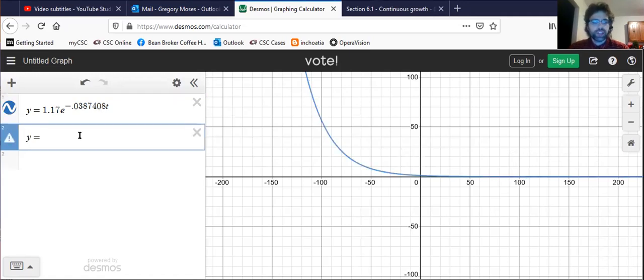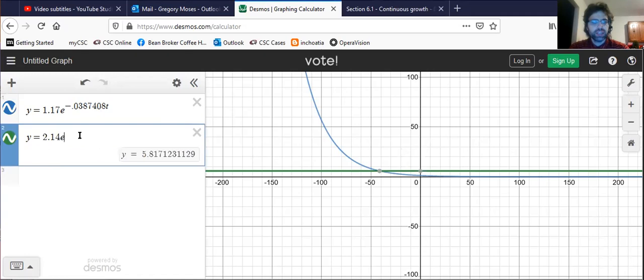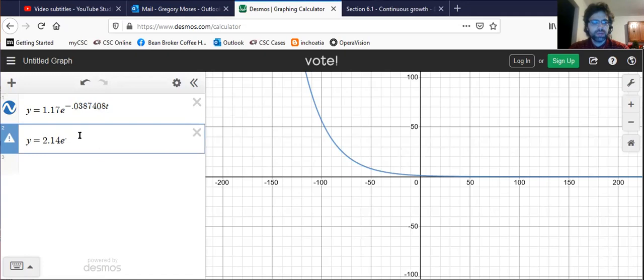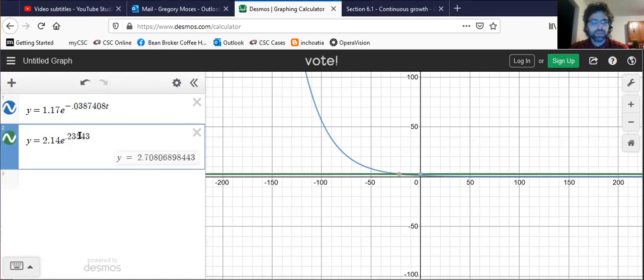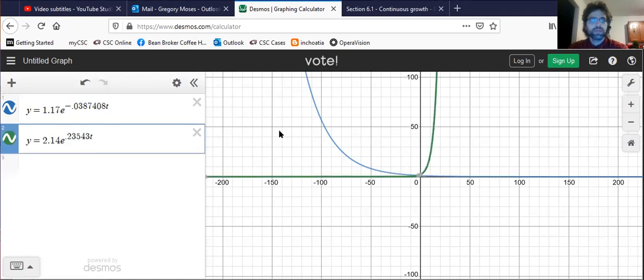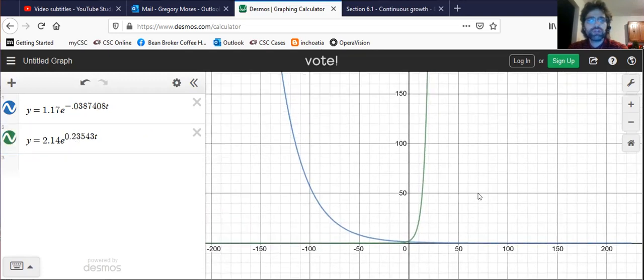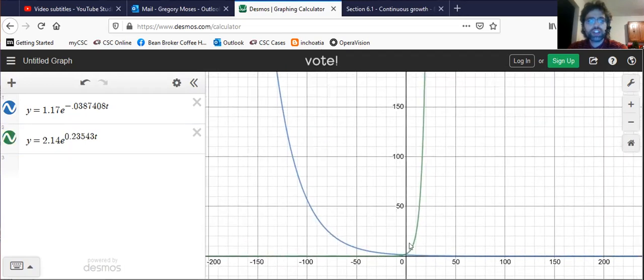If we had a positive r, I selected pretty much at random 0.23543, you see the exponential function increases.